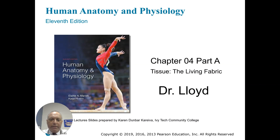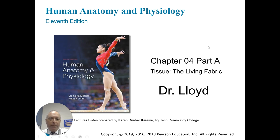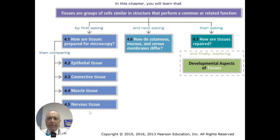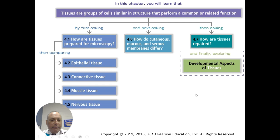It's Dr. Lloyd here. We've got chapter four, tissue. This is a very important chapter — it really gives information about a lot of different tissues in the body. The purpose of today's talk is to compare epithelial, connective, muscle, and nervous tissue, then discuss how cutaneous, mucous, and serous membranes differ, and finally cover tissue repair and some developmental aspects of germ layers.